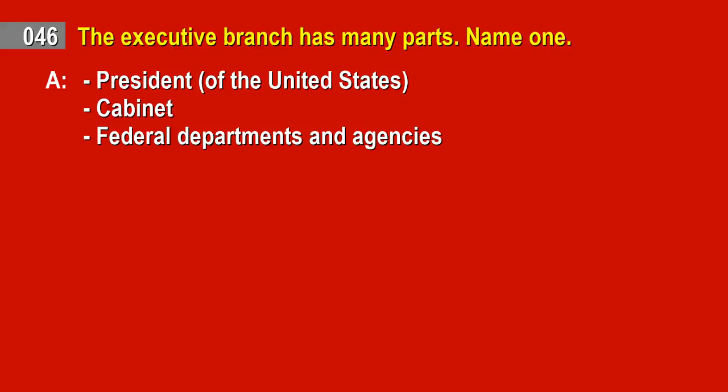Question 46. The executive branch has many parts. Name one. Answer: President of the United States. Cabinet. Federal departments and agencies.